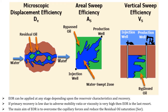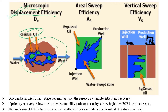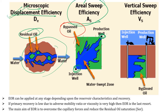This figure shows microscopic displacement efficiency — water has traveled through sand grains and whatever oil is left behind is residual oil. The aerial sweep efficiency figure shows the injector and producer wells, with bypassed oil in unswept regions and the blue region as the water swept zone. For vertical sweep efficiency, in the high permeability streak the waterfront has already reached the producer well, while in lower permeability layers the waterfront is still far from the producer.